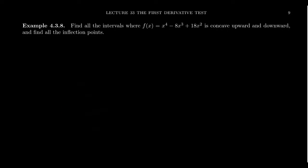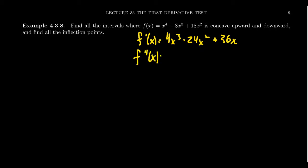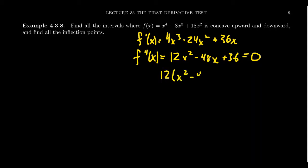Let's illustrate this with an example. Let's find all the intervals where f(x) = x⁴ - 8x³ + 18x² is concave upward or concave downward, and find all the points of inflection. We have to calculate the second derivative to learn about concavity. The first derivative by the power rule gives 4x³ - 24x² + 36x. We don't really need the critical numbers since we're not asking about monotonicity, so we proceed to calculate the second derivative: 12x² - 48x + 36.